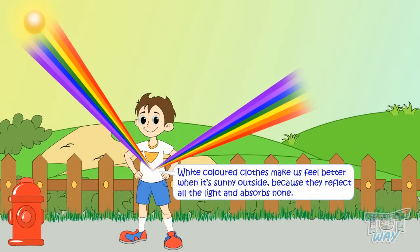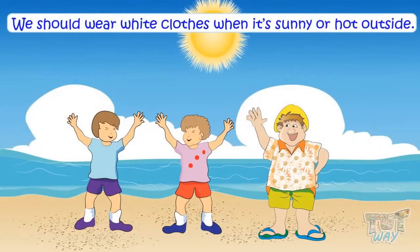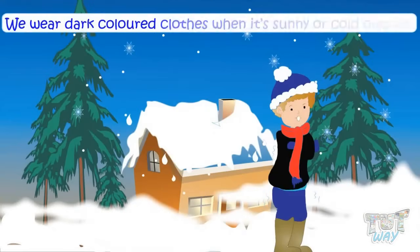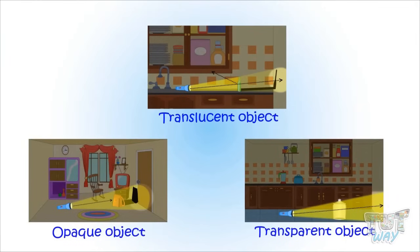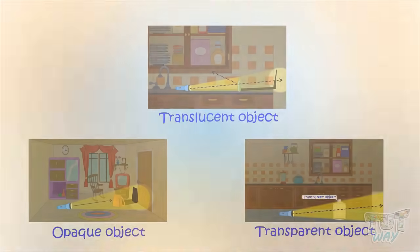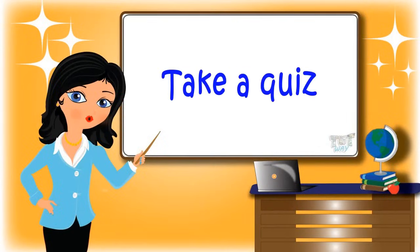This is why we should wear white and light color clothes when it's hot outside and dark color clothes when it's cold outside. So kids, today we learned how different types of objects absorbs and reflects different amounts of light. Now go ahead and take a quiz to learn more. Bye-bye!